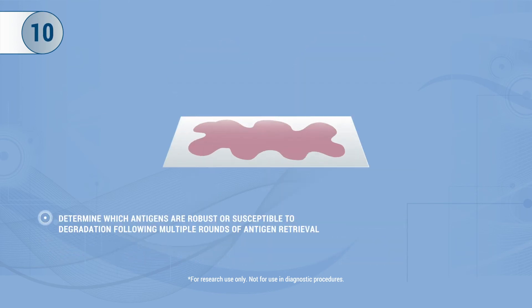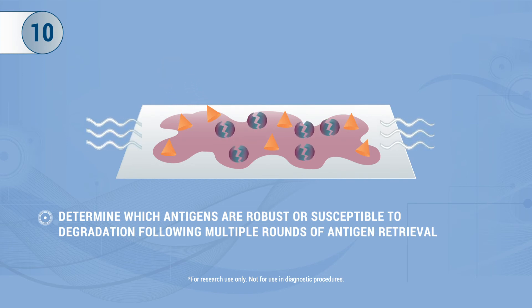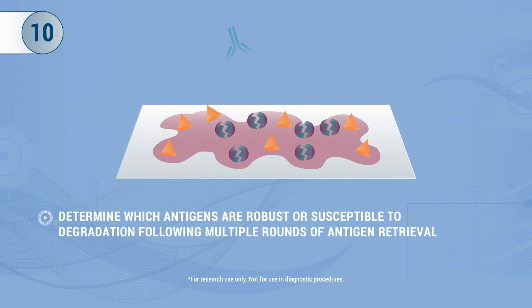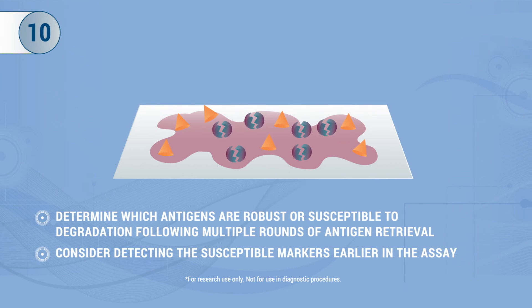Tip 10: Finally, in addition to the order of the chromogens, you need to consider the order of the markers that you are detecting. Some antigens may be unreliable or susceptible to degradation following multiple rounds of antigen retrieval. Consider detecting these earlier in the assay.